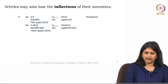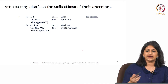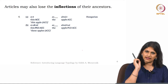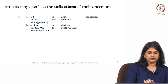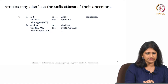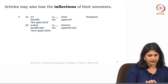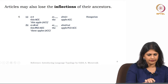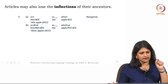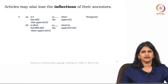The third set of data is Hungarian. In Hungarian, the articles lose the inflections of their ancestors - they have the trace but the inflections are lost. Look at the Hungarian data: 'this apple' is 'ezt' and 'the apple' is 'az.' When you say 'this' versus 'the,' you see the inflection has been lost. The accusative marker and plural inflection are missing, so this is an instance of morphological reduction in Hungarian.